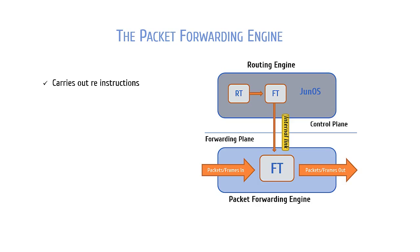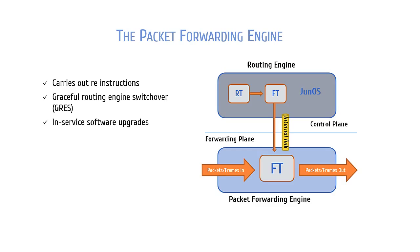Because of this design, Junos devices can perform high availability functions like graceful routing engine switchover, unified in-service software upgrades, and non-stop active routing. The RE handles all protocol processes in addition to all of the other software processes that control a device's system management, user access, interfaces, and chassis components. As we've mentioned before, all of these processes run on top of the FreeBSD kernel. The Junos software directs all of the protocol traffic from an interface to the RE for processing. The RE also receives hardware and environmental status messages from the PFE and acts on them.